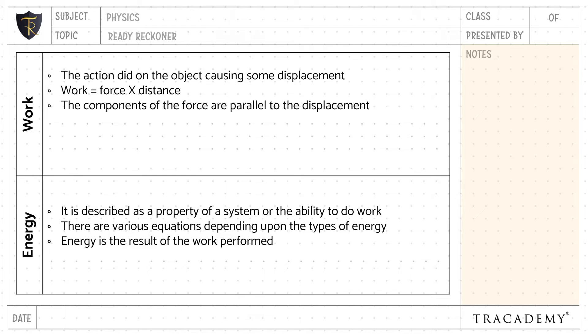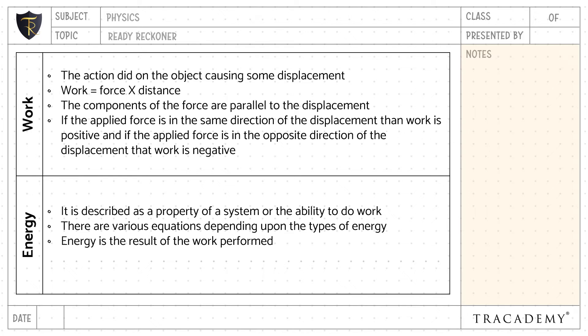If the applied force is in the same direction of the displacement, then the magnitude of work is positive. And if the applied force is in the opposite direction of the displacement, then the magnitude of work is negative.